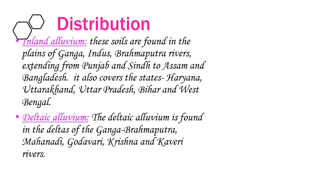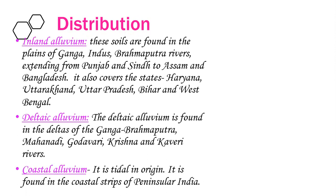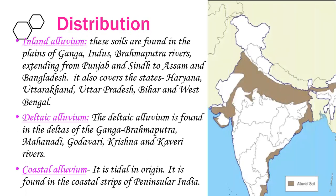The second category is deltaic alluvium. The deltaic alluvium is found in the deltas, as the name suggests, of the Ganga, Brahmaputra, Mahanadi, Godavari, Krishna and Kaveri. The third category is coastal alluvium. It is tidal in origin, found in the coastal strips of peninsular India and also in the plains of Gujarat.